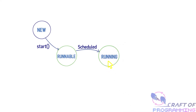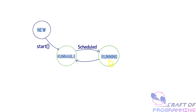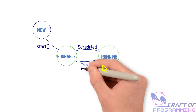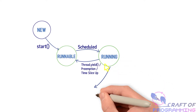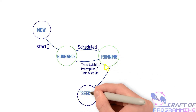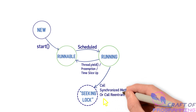This transition happens when the operating system scheduler schedules the thread. While the thread is running, the thread may choose to yield by calling thread.yield(), in which case it will be preempted and put back onto the runnable state, or its time slice may be up, in which case the operating system scheduler will preempt the thread and put it back onto the runnable state. Or the thread itself may move from the running state into the seeking lock state by calling a synchronized method or entering a synchronized block.